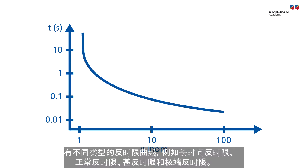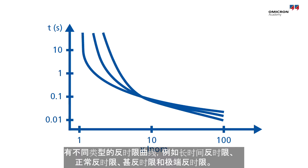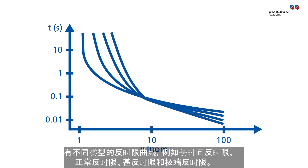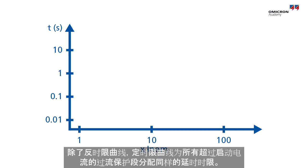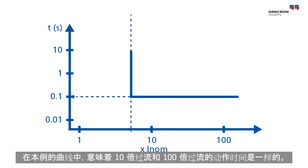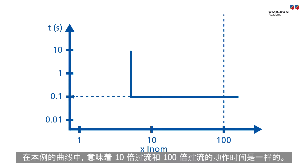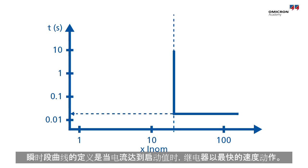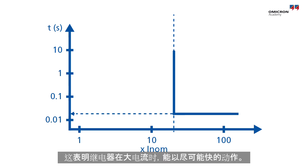An inverse tripping time curve indicates that the relay will trip increasingly faster due to higher overcurrent. There are different types of inverse time curves such as long time inverse, normal inverse, very inverse, and extremely inverse. Other than inverse time curves, definite time curves assign the same delay time to all overcurrents that exceed the pickup value. In our curve example, that means the trip time is the same for a 10-fold overcurrent and a 100-fold overcurrent. An instantaneous curve is when a relay operates at its maximum tripping speed after the pickup current has been exceeded, meaning it trips as fast as it can for very high currents.